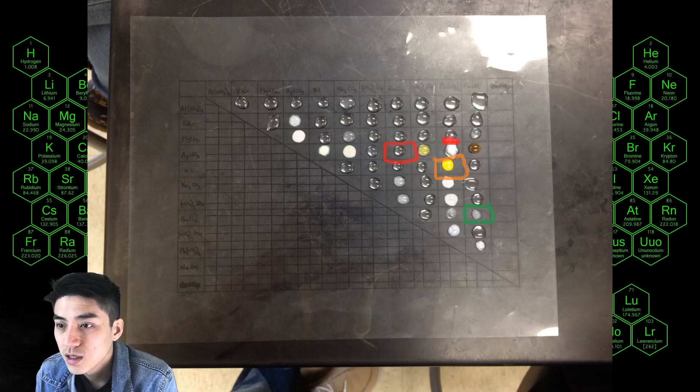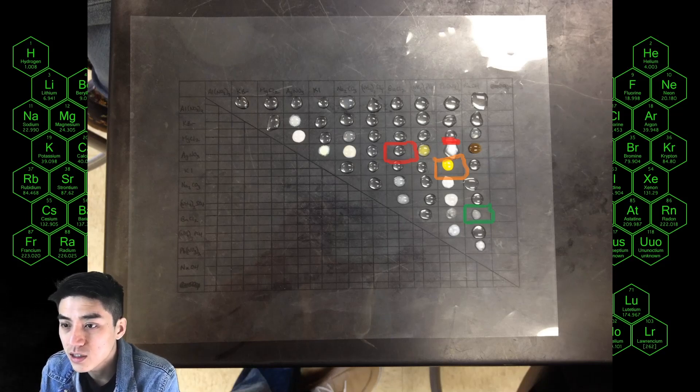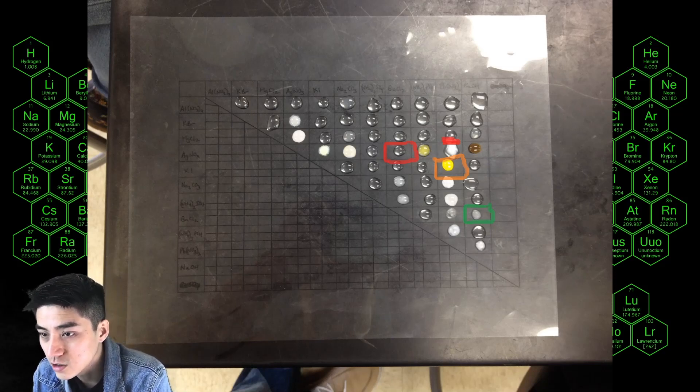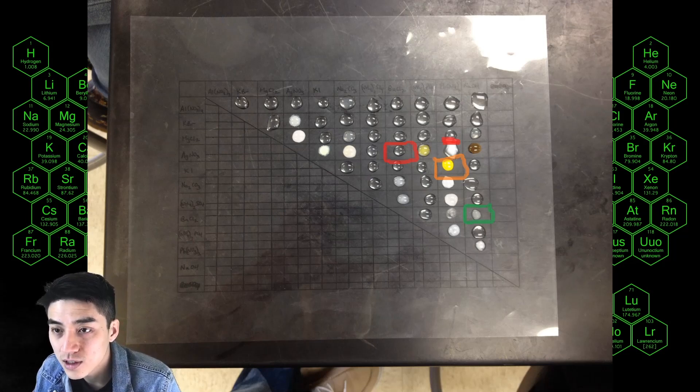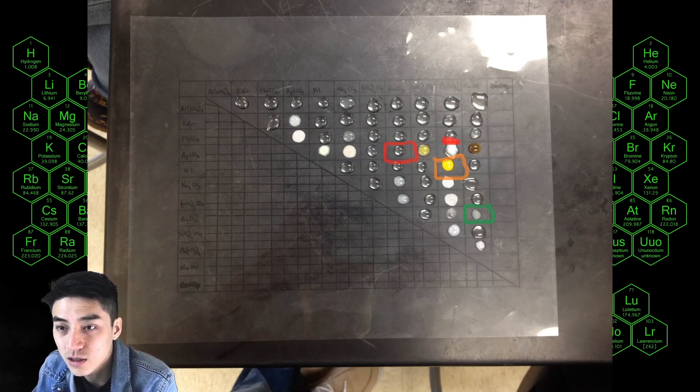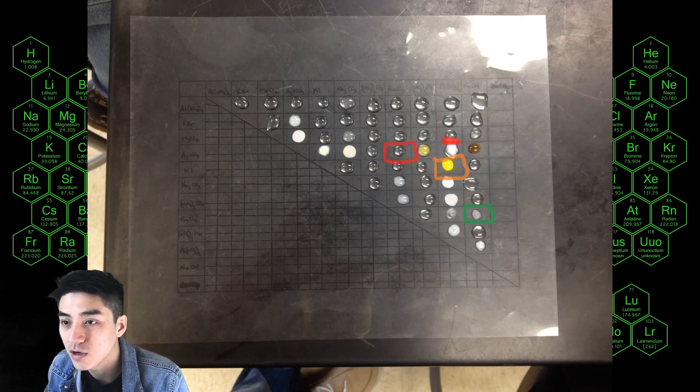If you notice on the transparency it's been cut into a triangle—the bottom half has all been crossed out because those are duplicate reactions. So for example in the very first grid you have a duplicate reaction of aluminum nitrate and aluminum nitrate, which is why half of it's been crossed out.